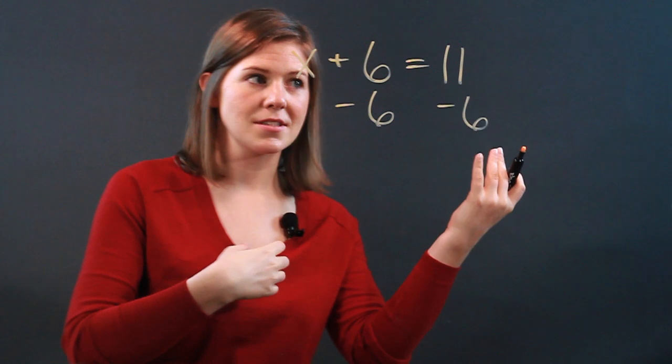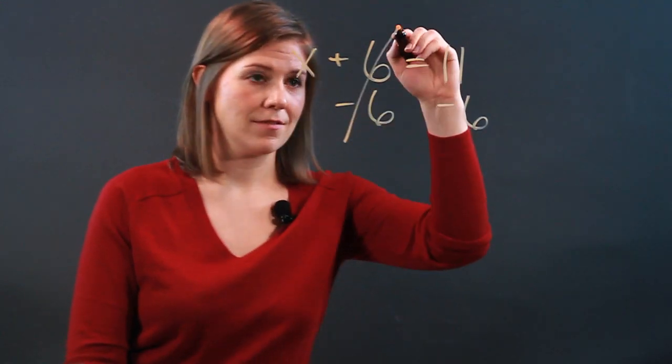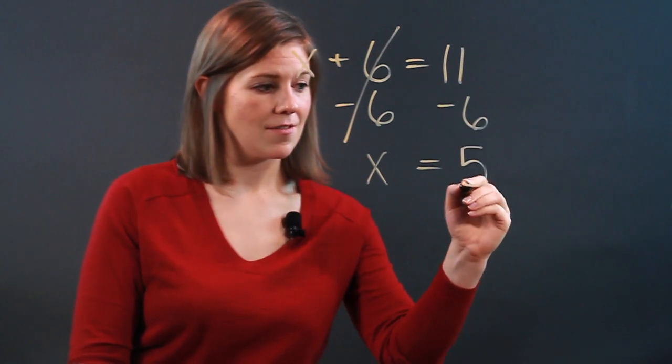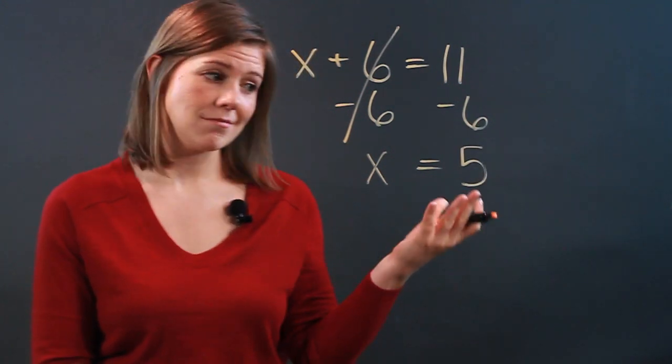If you take 6 away from both sides, it will remain equal and you will now only have x and, well, 11 minus 6, 5. So you've solved your equation. x equals 5.